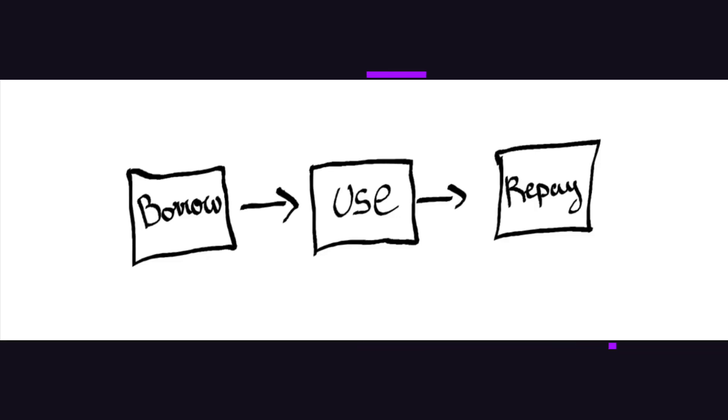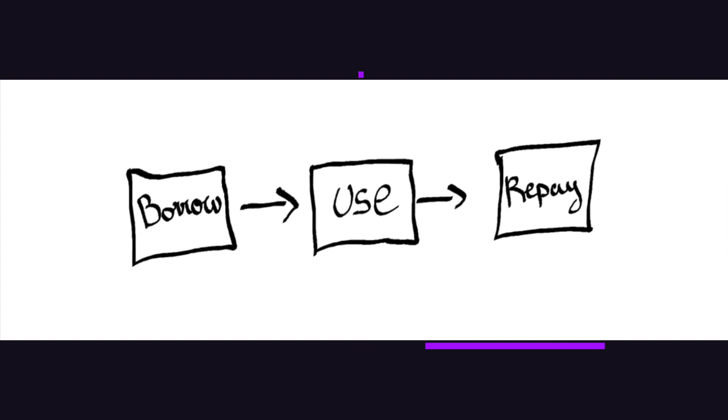With a normal loan, a borrower can take out some money, an asset, a property, and then pay that back in the future including interest. However, in order to do that, they have to provide a form of security to prove they can pay it back — otherwise they won't get a loan. Flash loans, on the other hand, do not need to be collateralized. You don't even have to prove who you are to get massive amounts of money, as long as the borrowed amount and the fee is paid back in the same transaction.